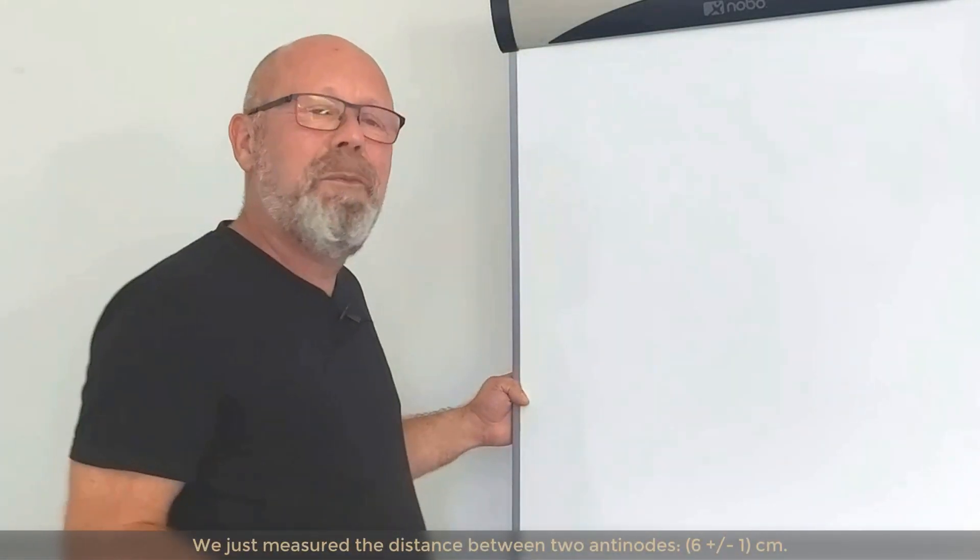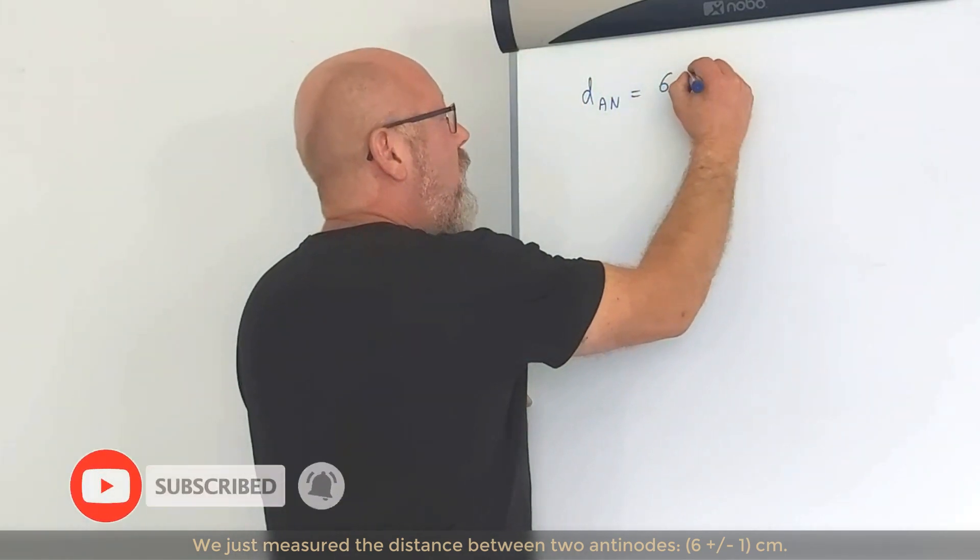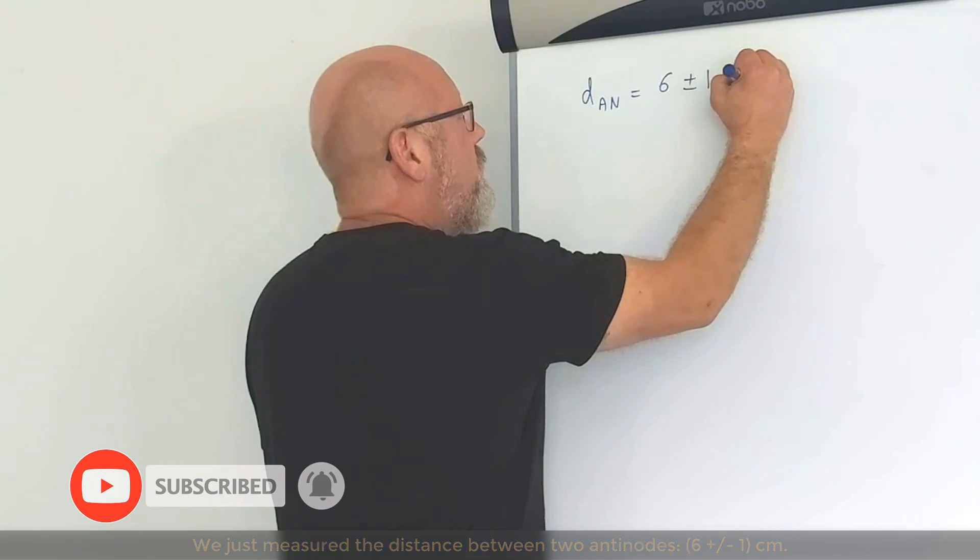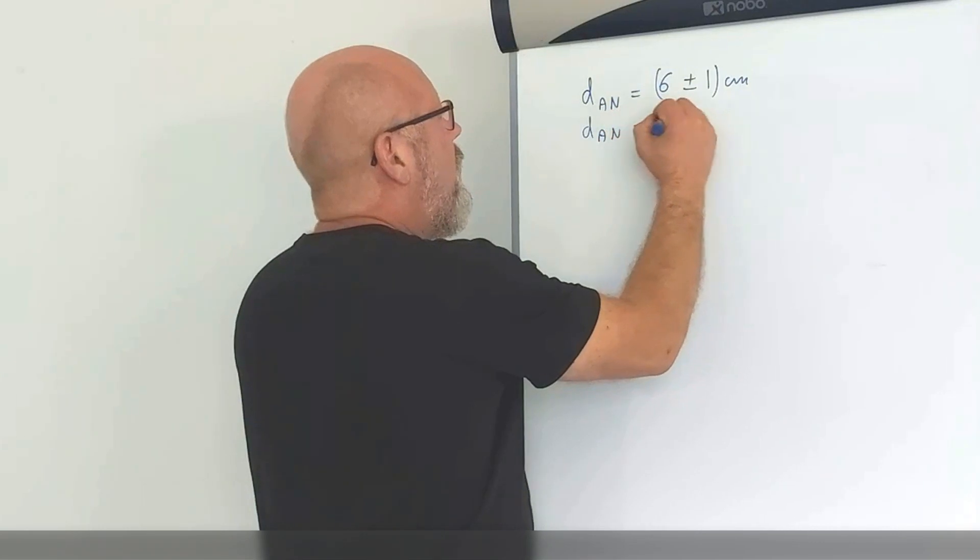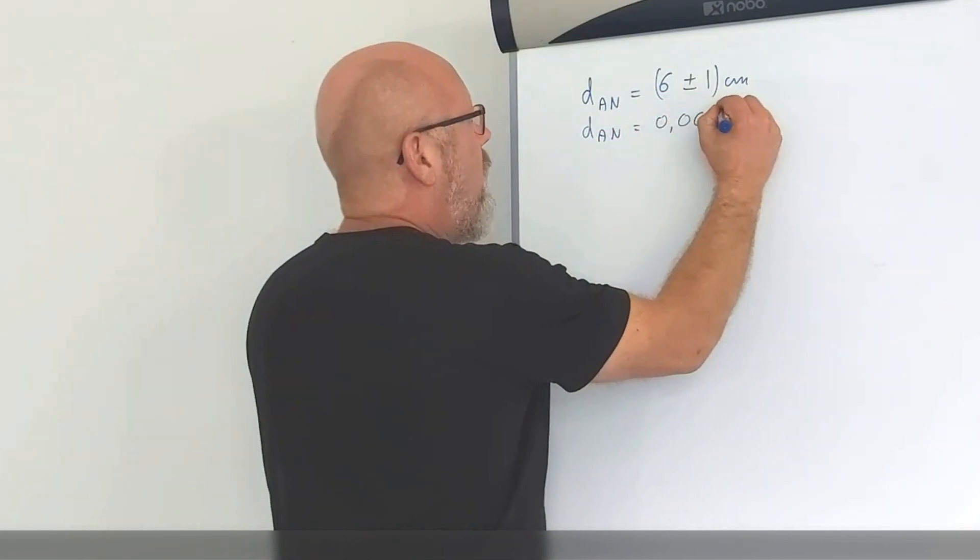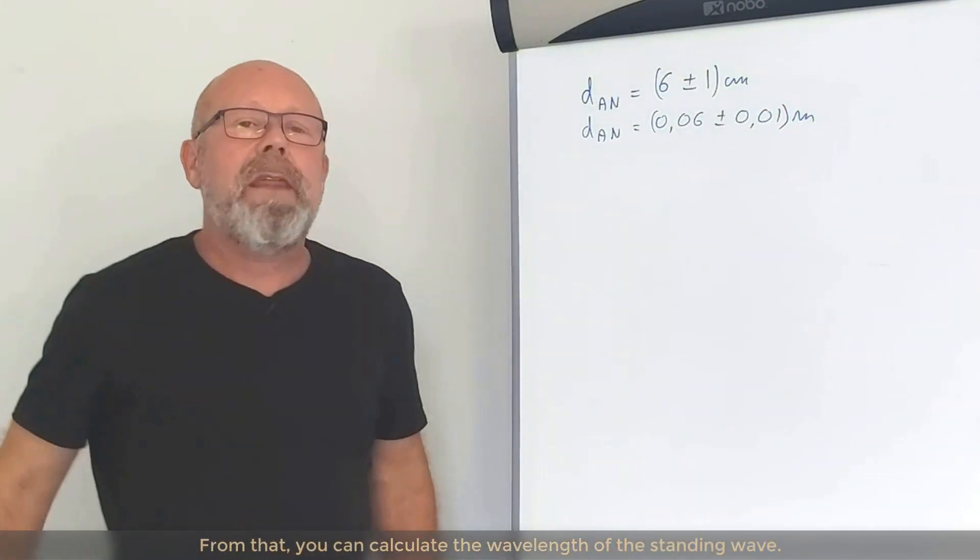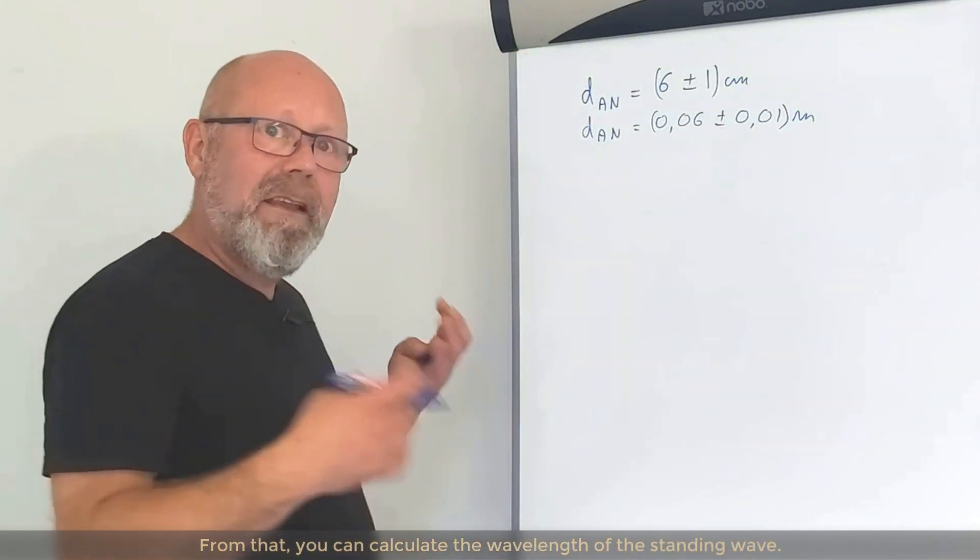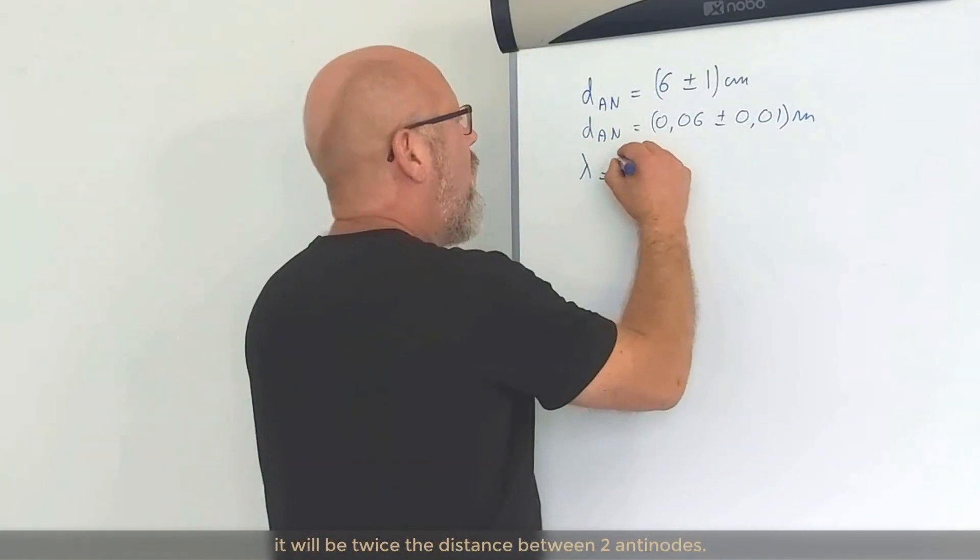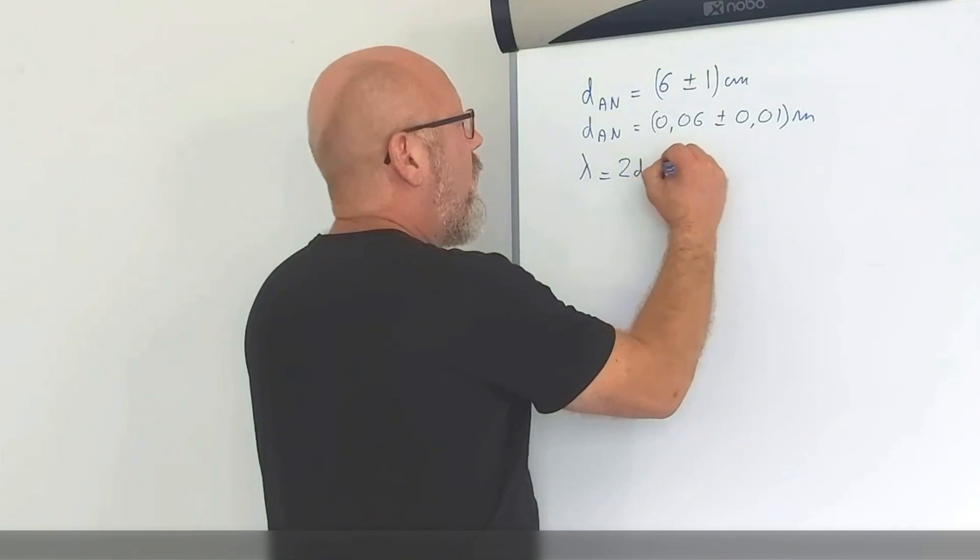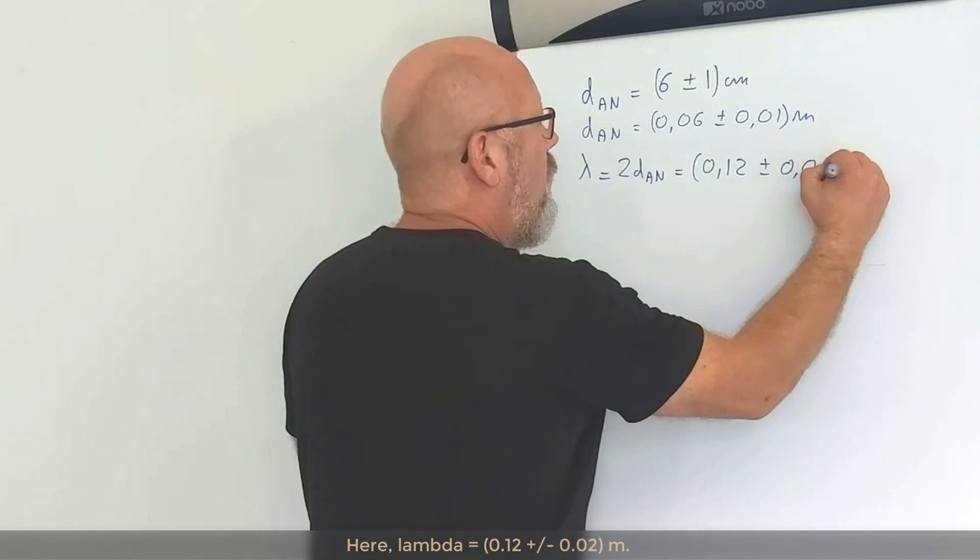We just calculated the distance between two anti-nodes. 6 centimeters plus minus 1 centimeter. Let's put it in meters. 0.06 meters plus minus 0.01 meter. From that, you can calculate the wavelength of the standing wave because it will be twice the distance between two anti-nodes. So, here, 0.12 plus minus 0.02 meters.